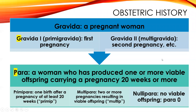Some terms to become familiar with: Gravida refers to a pregnancy or a pregnant woman. Gravida 1 means it's her first pregnancy. You'll see it written as G1, P0 or G2, P1. Gravida is how many times they've been pregnant, and Para is how many times they've delivered a viable baby or carried a pregnancy 20 weeks or more. So G2 P1 means pregnant twice, delivered one baby.